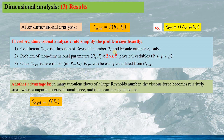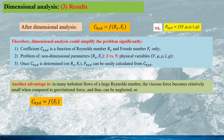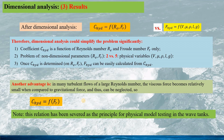Another advantage of this simplified expression is that in many turbulent flows of a very large Reynolds number, the viscous force becomes relatively small compared to the gravitational force and can be neglected. So the hydrodynamic force coefficient becomes dependent only on the Froude number, and this relation has been adopted as the principle for physical modelling tests in the wave tank.